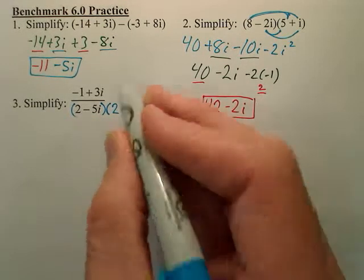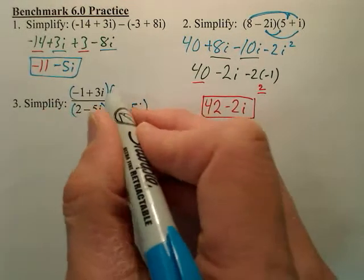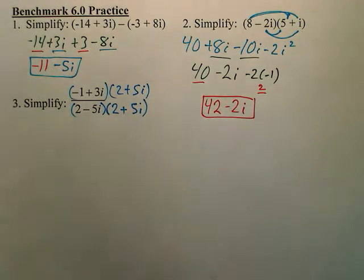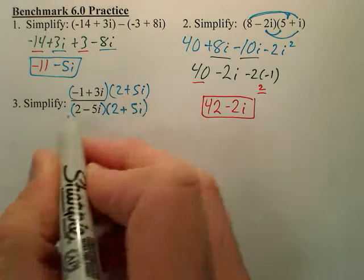But if I multiply the bottom by that, I also have to multiply the top by it. I can't just multiply one piece, so you multiply top and bottom. And now we FOIL the top and FOIL the bottom.